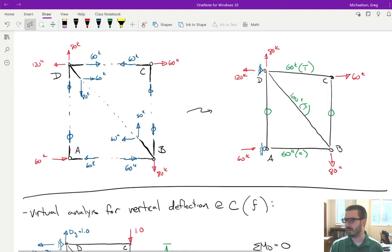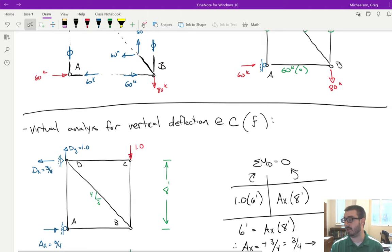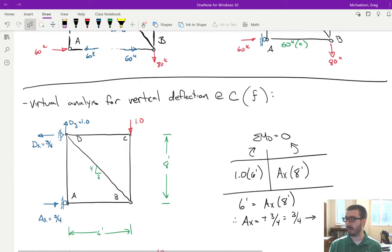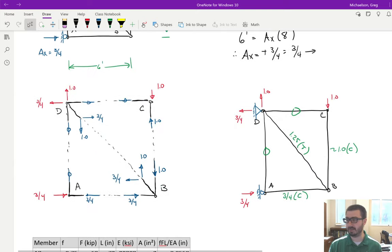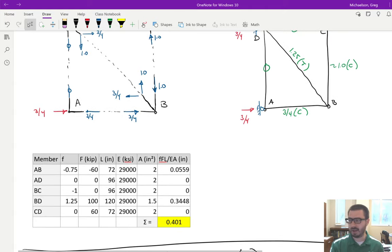Then we did our virtual analysis for the deflection at joint C. We placed that vertical load at joint C of one. Remember, it's a unit load, placed downward because we assumed the deflection would be downward. Once we had done that, we had a new model to analyze, and we did the same thing start to finish. Our remaining calculations we did in Excel.